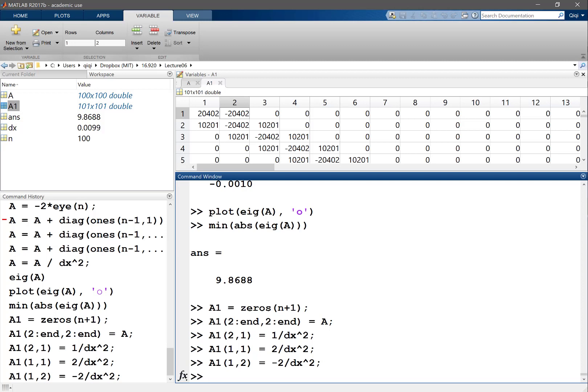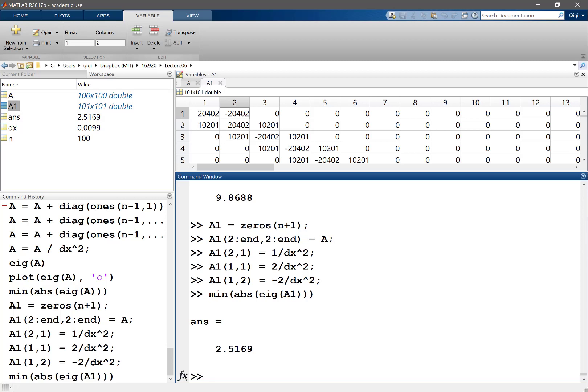And now let's look at what the stability, what the minimum eigenvalue is. Suddenly it decreased by a lot, okay? So this is saying, okay, if I have different boundary conditions, it can actually dramatically affect the stability of the system, right?